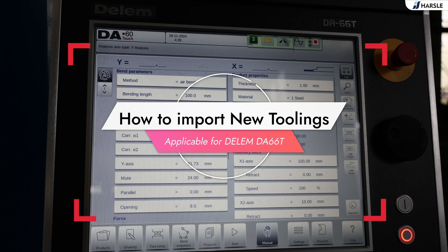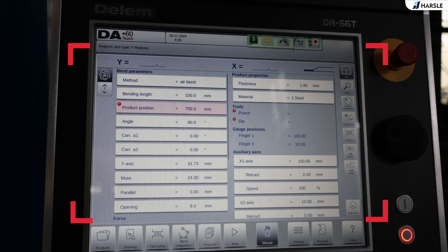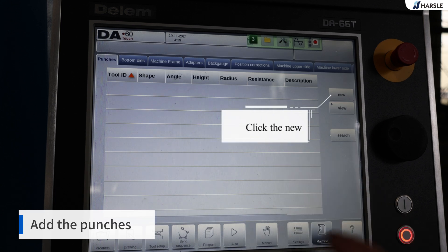How to import new toolings, applicable for Dilem DA66T. Add the punches.